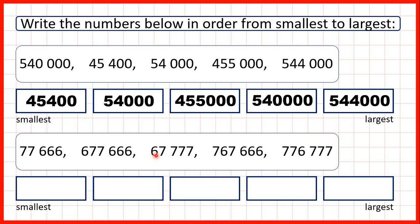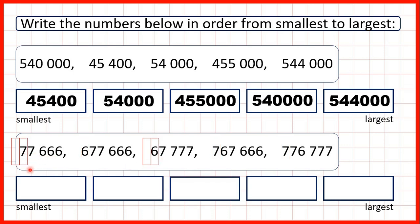Again, we can remember that numbers with fewer digits, if we're comparing whole numbers, are smaller. So here we have two numbers that don't have any hundred thousands. Now this number here has seven in the ten thousands, but this number only has six, so this is our smallest number, and then this first number is next smallest.